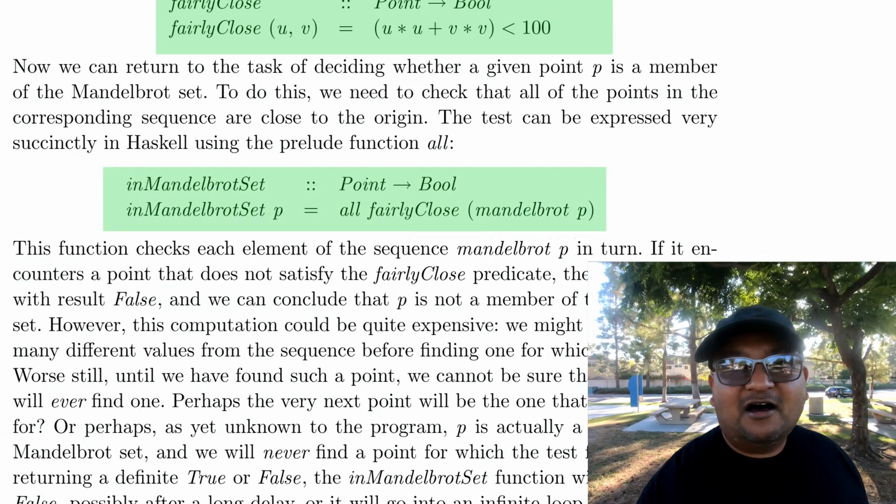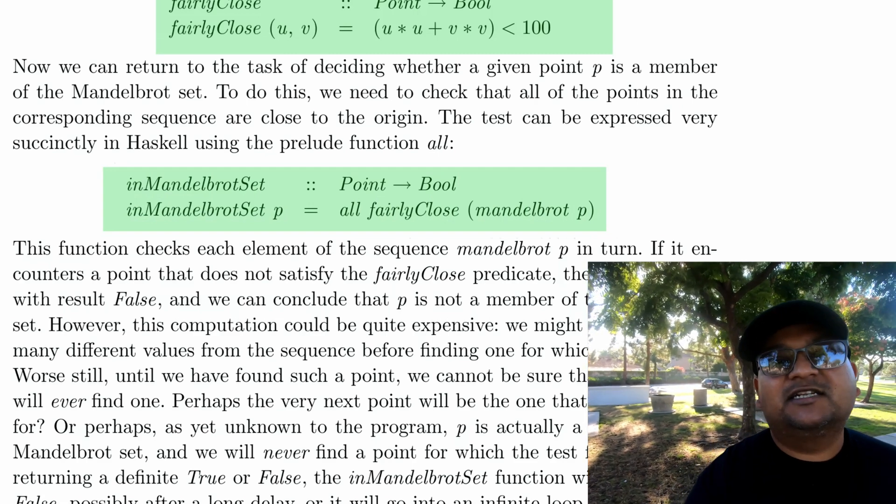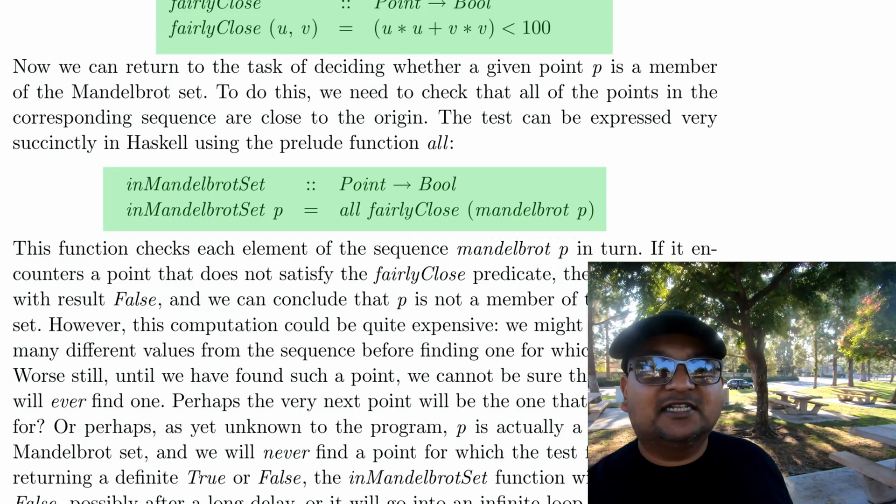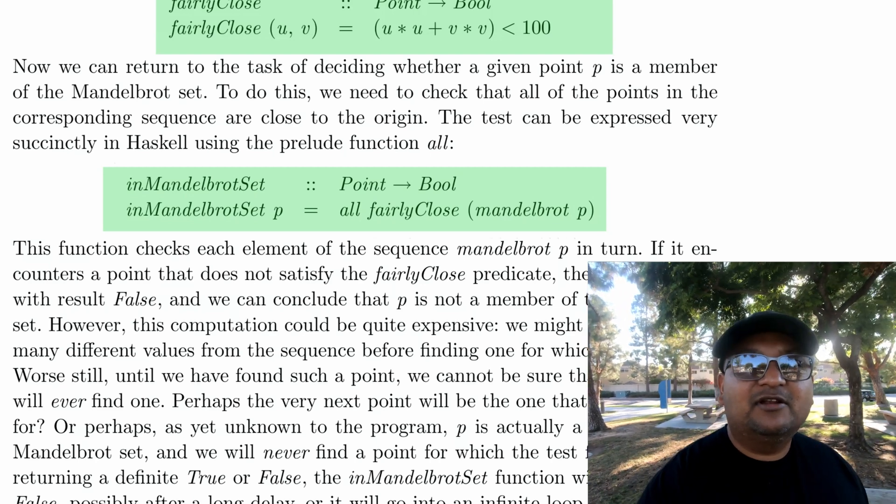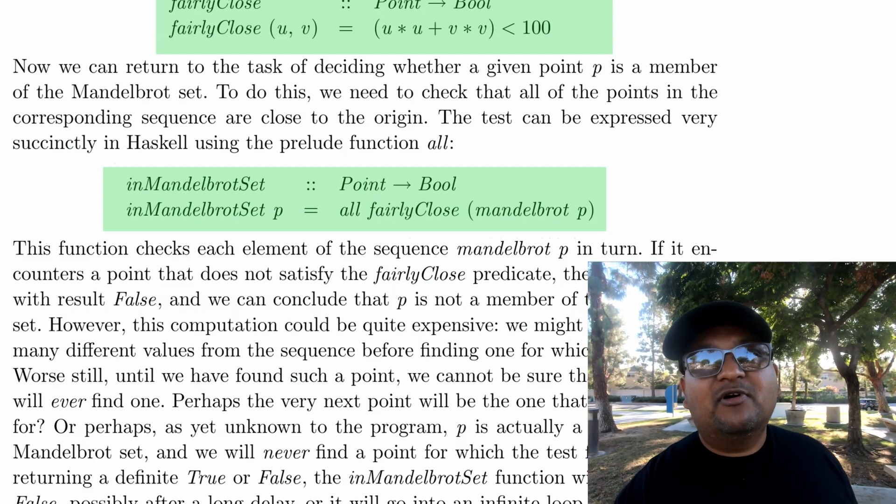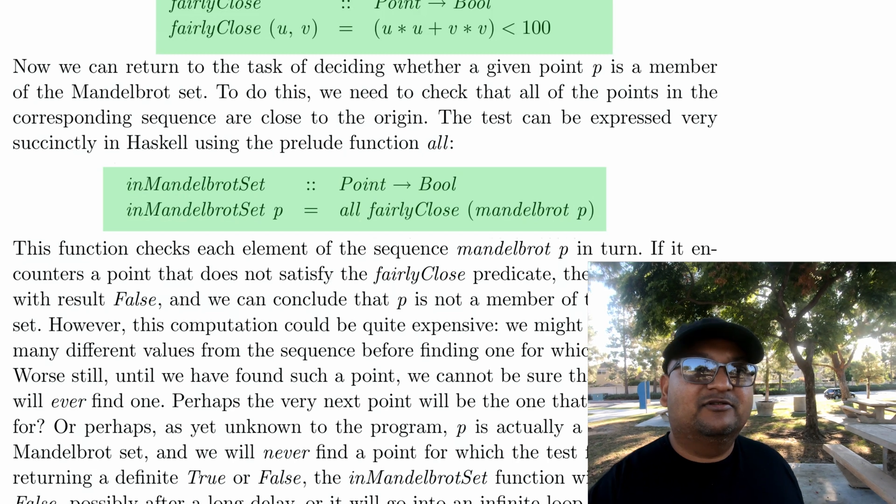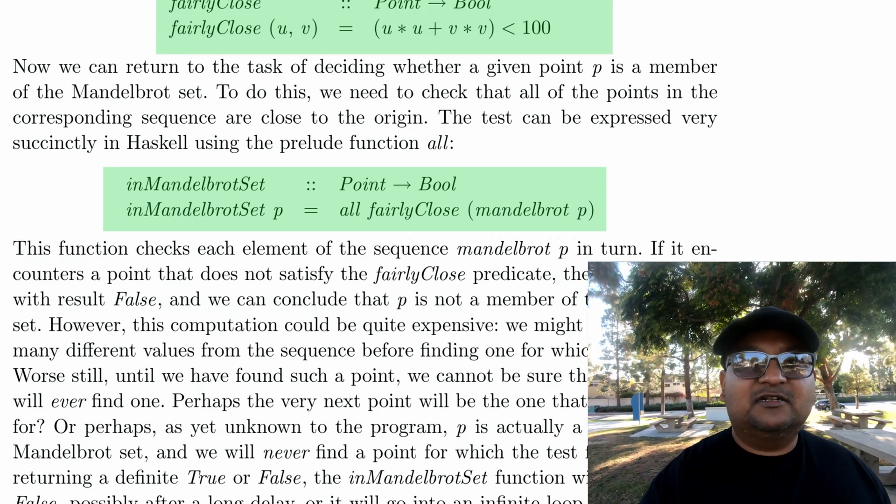You can express this notion of a sequence of points staying close to the origin pretty easily in Haskell. But the problem with this expression is that it might be non-terminating. How many points are you going to look at before you determine that all the points are close enough?